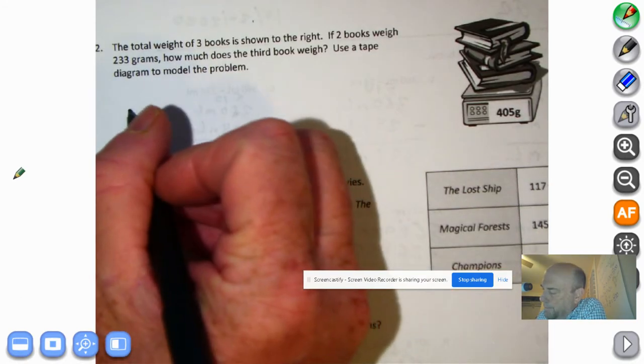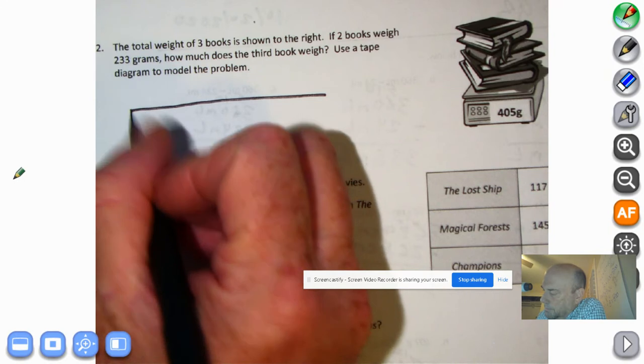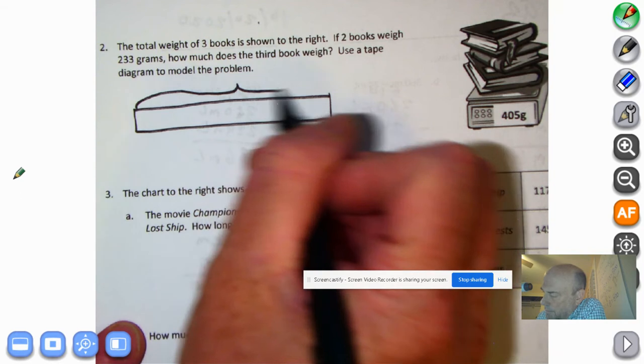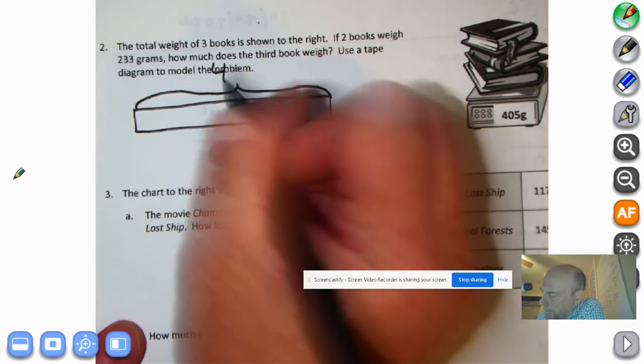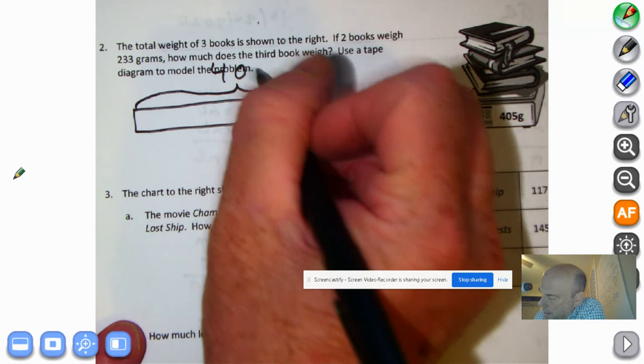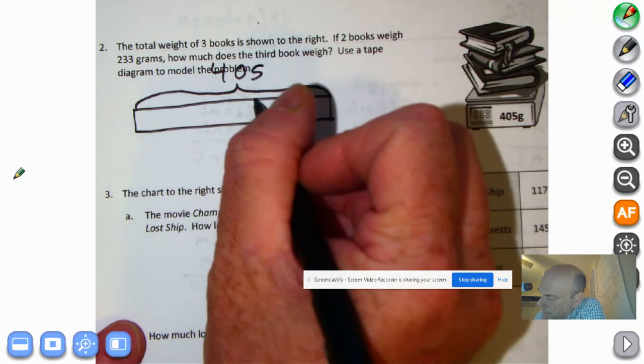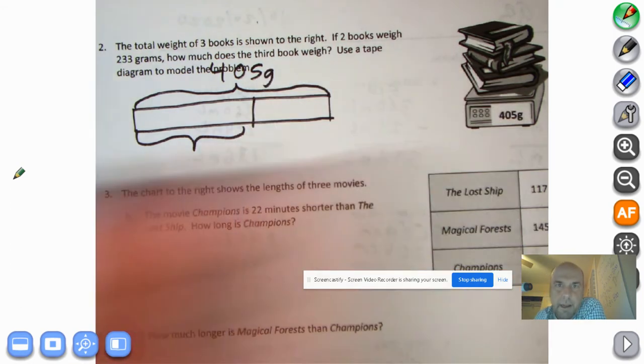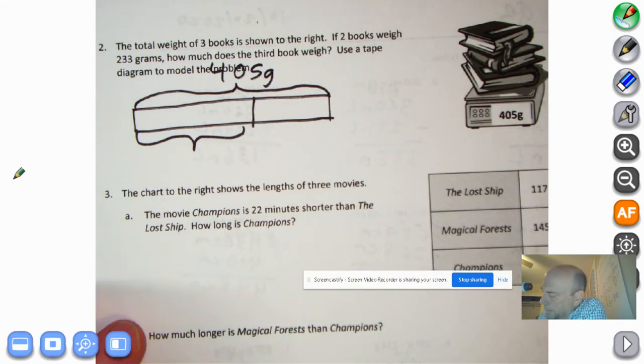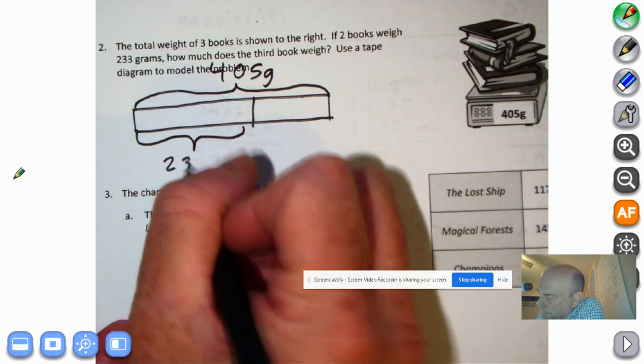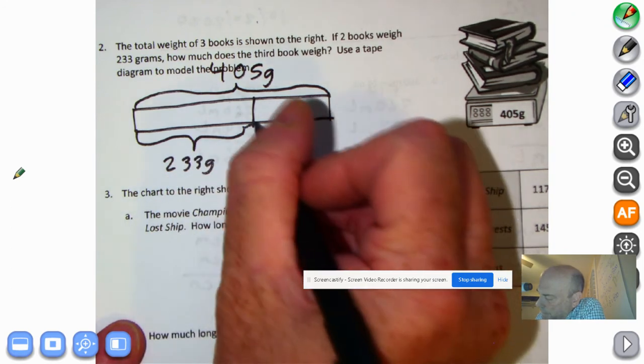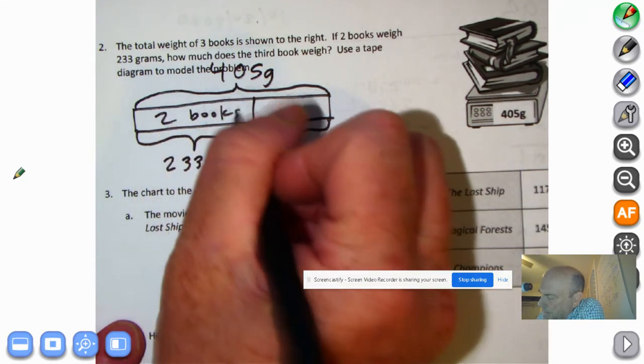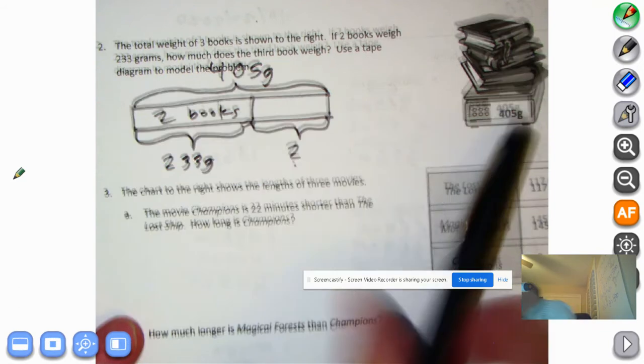Altogether, they weigh 405. Two of the books together, what do they weigh? Two of the books weigh 233 grams. What we need to find out is what that third book weighs, because these are two books.